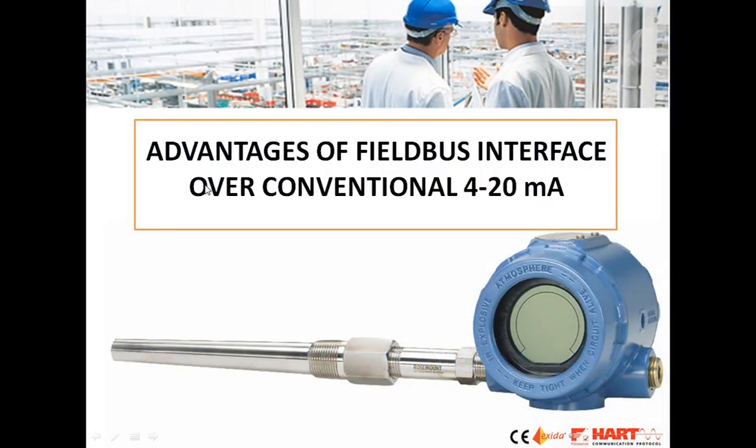Hi everyone. In this video I am going to discuss the advantages of fieldbus interface over 4 to 20 milliampere interface of a process transmitter. Process transmitters are used in industries for measuring various process variables like pressure, temperature, level, flow, pH, etc. Nowadays these process transmitters by default are having both these interfaces. Examples of fieldbus interfaces are Foundation Fieldbus, HART, Modbus, Profibus, etc.